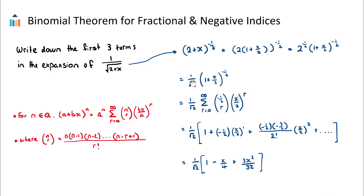So it's going to be one over root two multiplied by the expansion. Let's find the first three terms using this formula. It's one over root two multiplied by the sum from r equals zero to infinity of nCr with n equal to negative a half, and then our second term x over two to the power of r. We don't need the other term — a one to the power of n minus r — because that will always just be one.